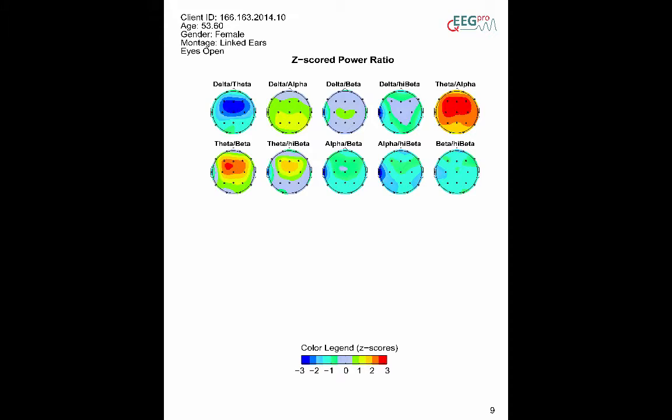However, they can be very useful when your client has very low or high voltages across all frequency bands, making it hard to see relevant deviations in the absolute power analysis. Download the QEEG Pro Manual for a more in-depth explanation.